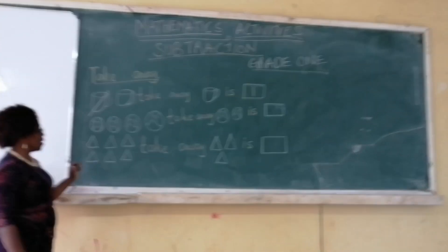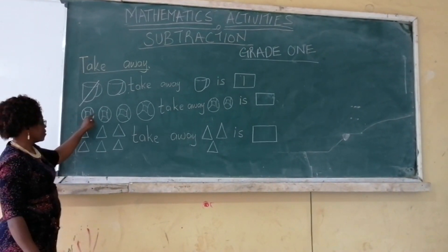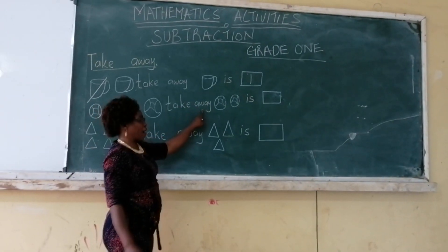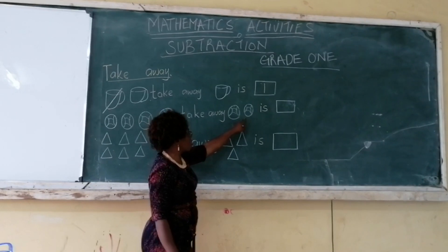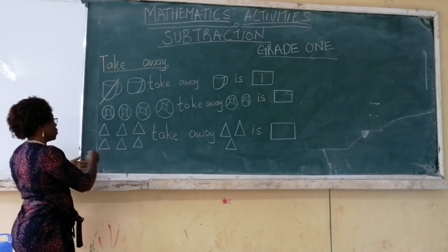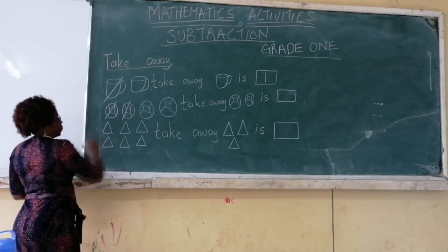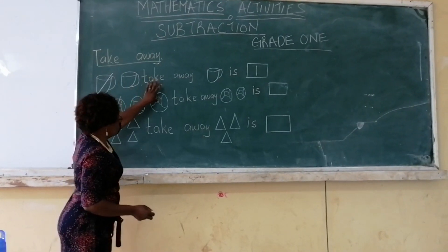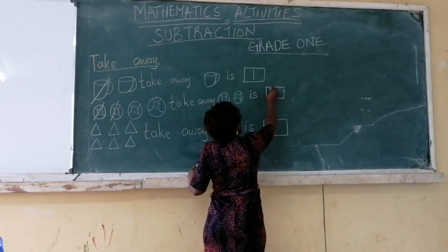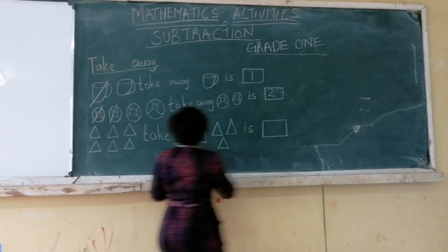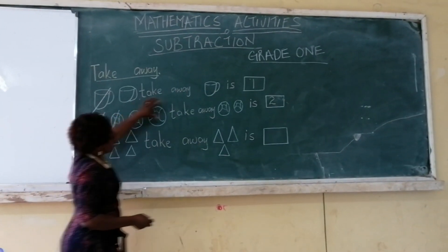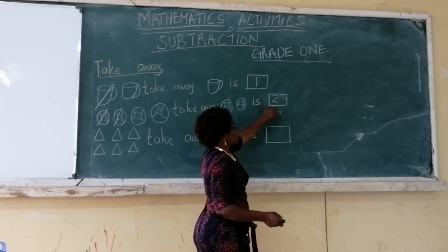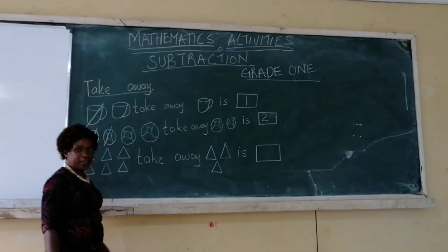Let us try the second one. How many cups do we have? One, two, three, four — take away how many? One, two. So, let us come here and take away two. One, two. So, we have been left with two balls. So, we say four balls take away two balls is two.